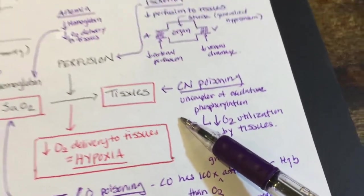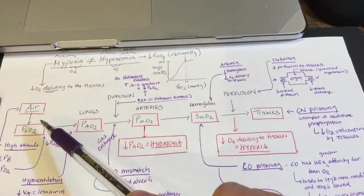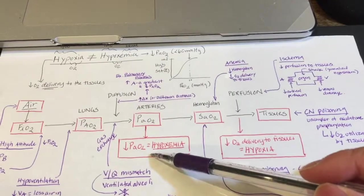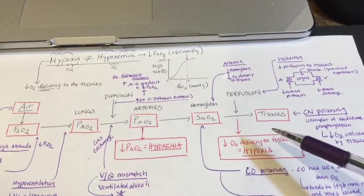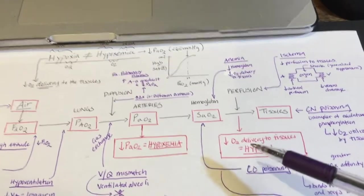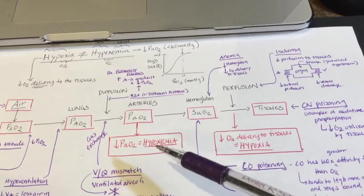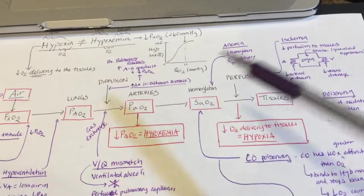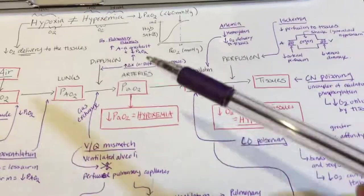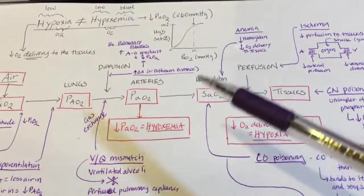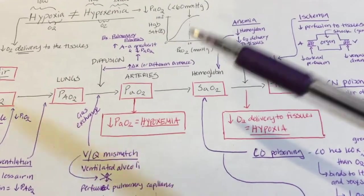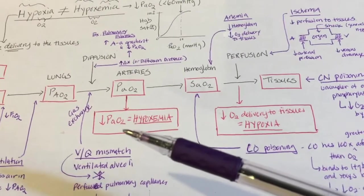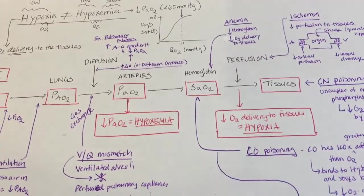Looking at the big picture, it's important to remember this step-by-step process. Everything before the arterial PO2 step causes hypoxemia, and everything from there onward causes hypoxia, with all causes of hypoxemia also causing hypoxia. Understanding every step of this pathway helps you understand everything that can go wrong and why. Once you draw this out yourself, you'll master this material and be able to answer any question about hypoxia and hypoxemia.